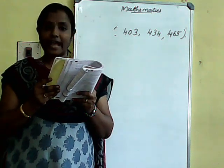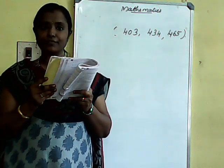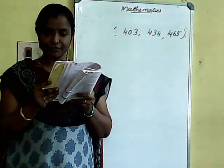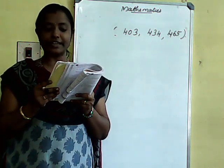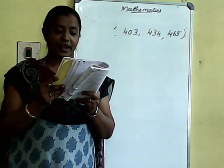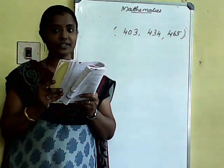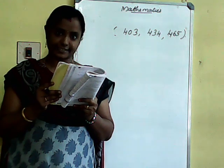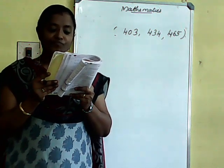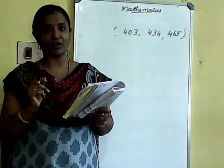7th problem: 3 tankers have capacities of 403 liters, 434 liters, and 465 liters of diesel respectively. Find the maximum capacity of a container that can measure the diesel of all three tanks an exact number of times.